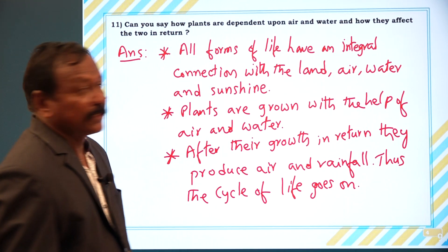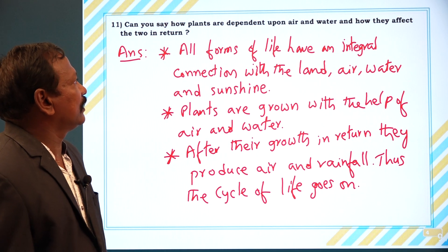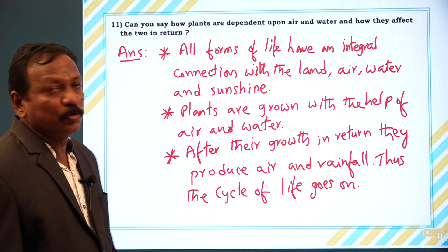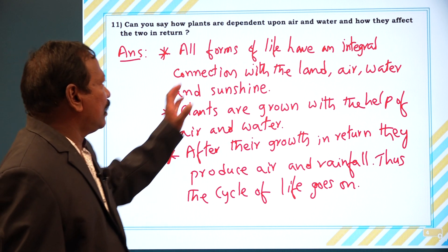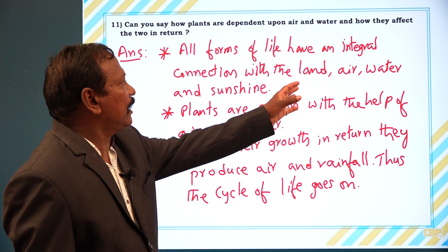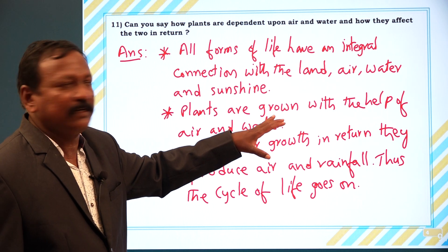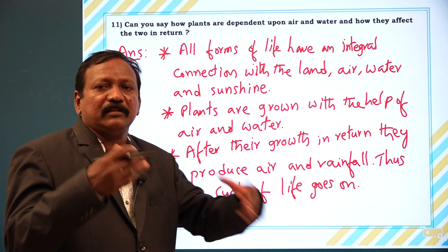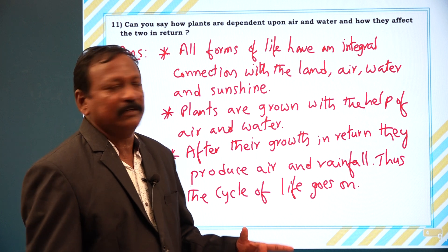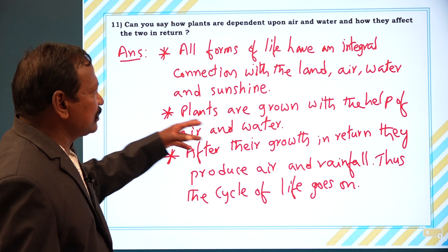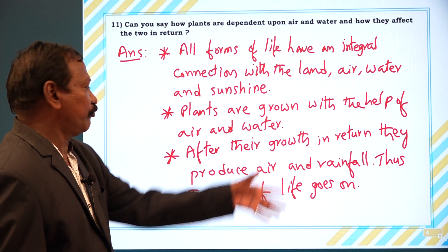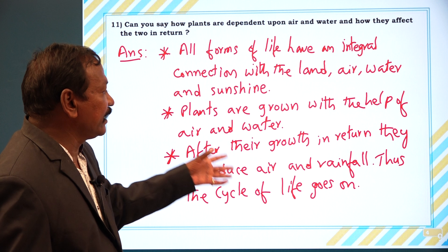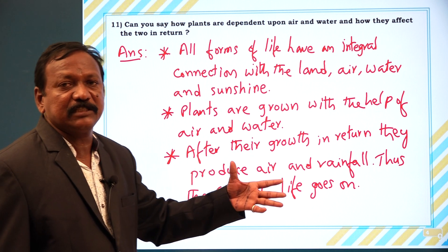The next question: can you say how plants are dependent upon air and water, and how they affect the two in return? All forms of life have an integral connection with land, air, water, and sunshine. On this earth, all living beings are based upon these things. Plants are grown with the help of air and water, and after they grow, in return, they produce air and rainfall. Thus, the cycle of life goes on.